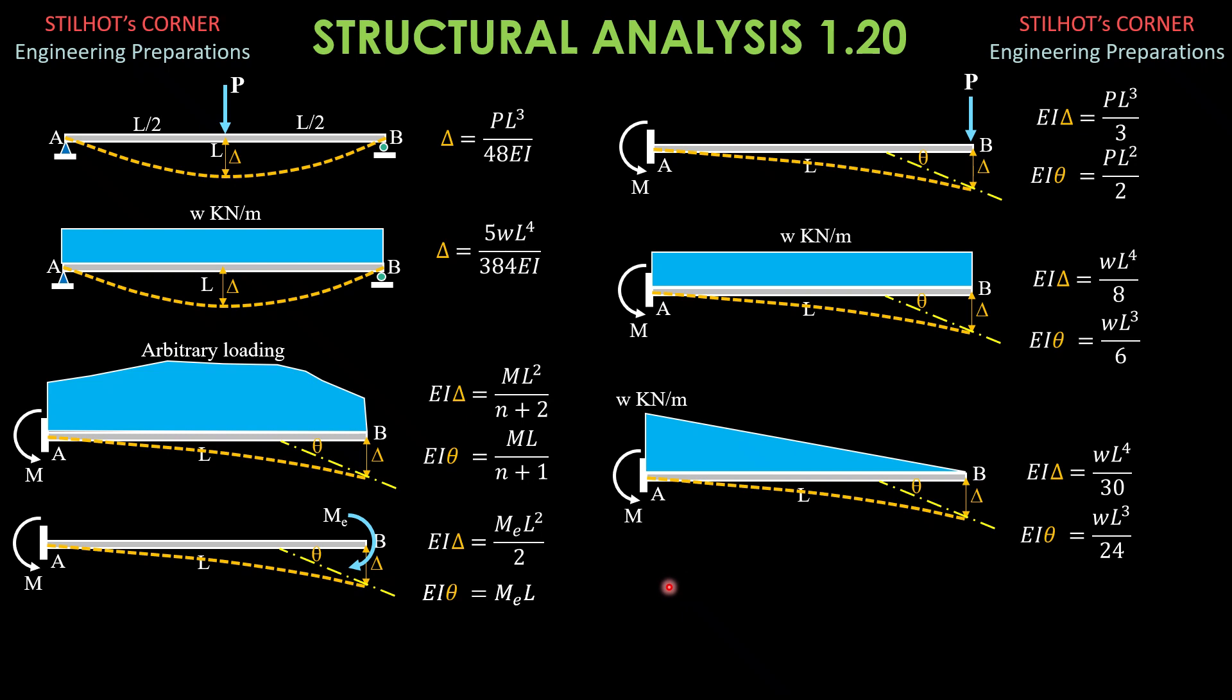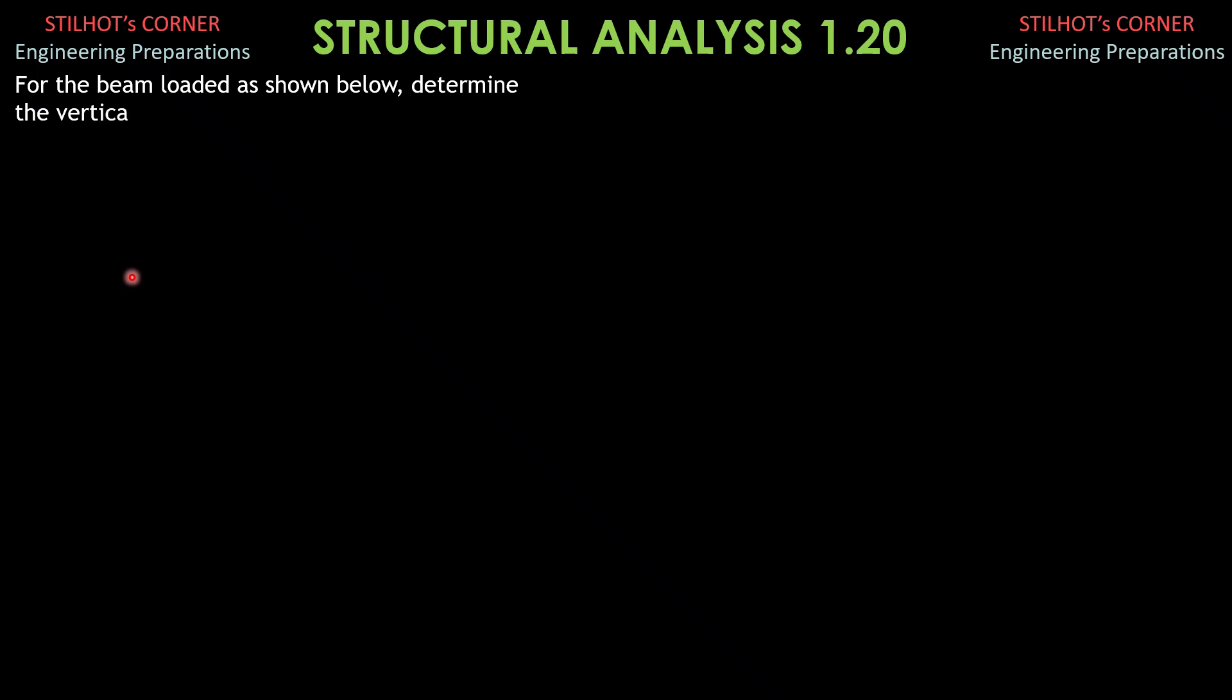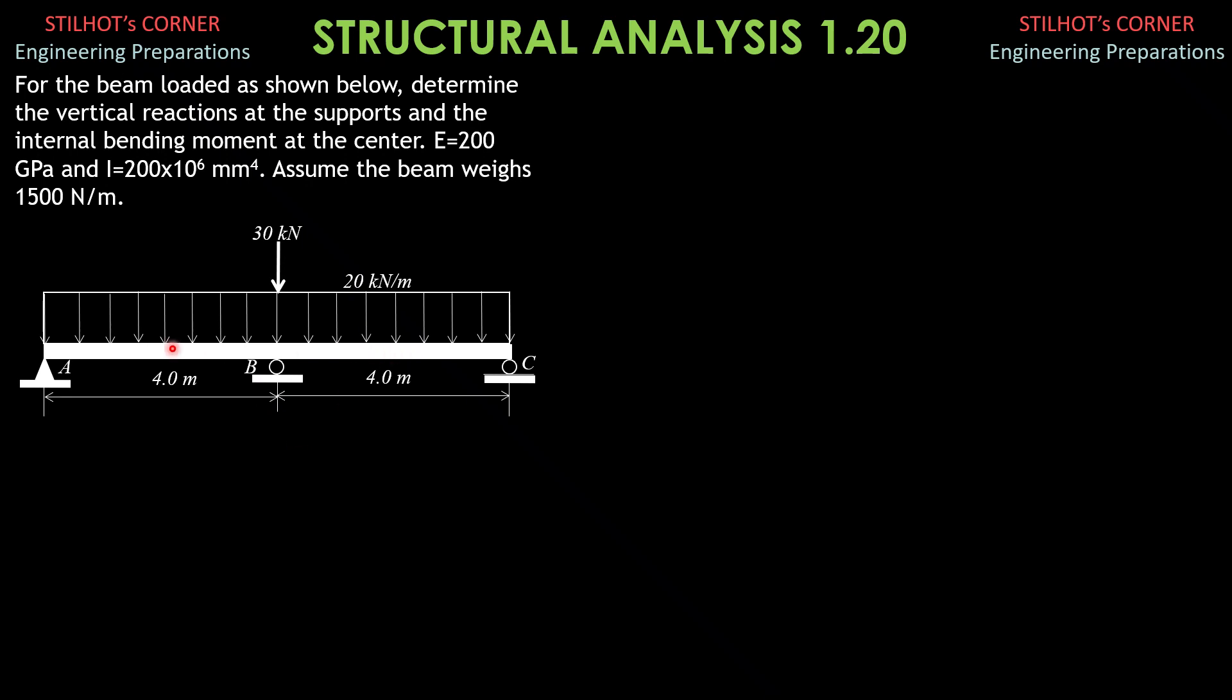Let's have this example. For the beam loaded as shown below determine the vertical reactions at the supports and the internal bending moment at the center. E is 200 GPa and I is 200 times 10^6 mm^4. Assume the beam weighs 1,500 newtons per meter or 1.5 kilonewtons per meter. Therefore, the total uniform load is 20 kilonewtons per meter plus the weight of the beam which is 1.5 kilonewtons per meter, so it is 21.5 kilonewtons per meter. And there is also a concentrated load at the center.